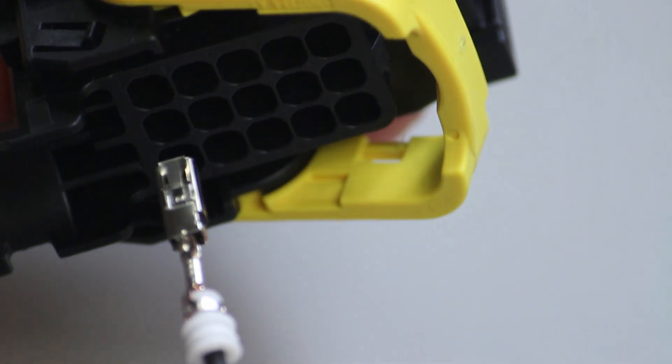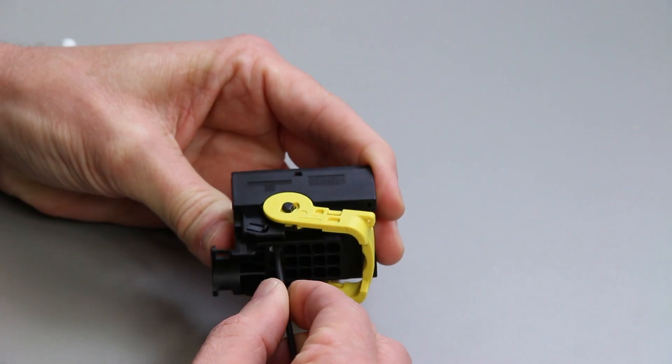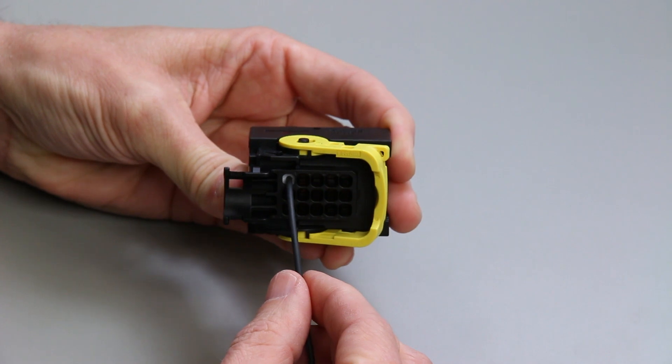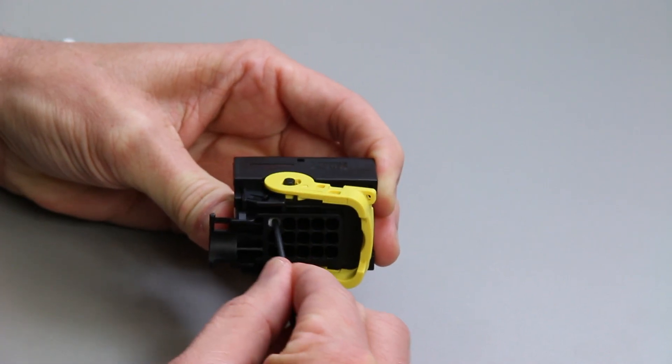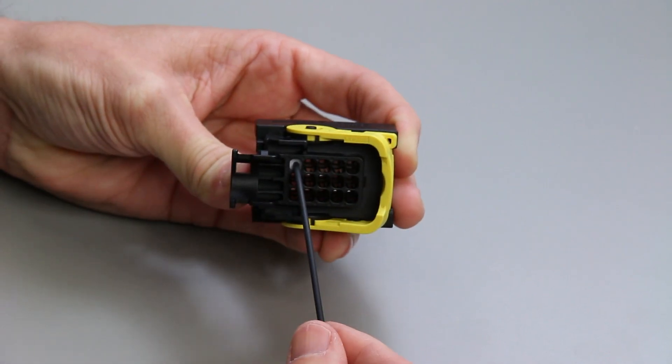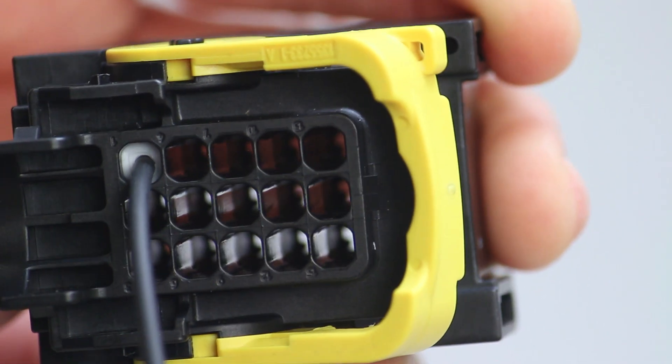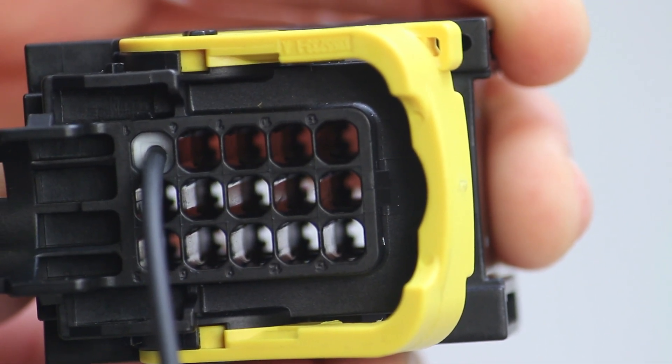Push the contact straight into the rear of the connector until you hear and feel a click. A slight tug will verify the contact is locked in place. Repeat this process until all of the cavities are filled.